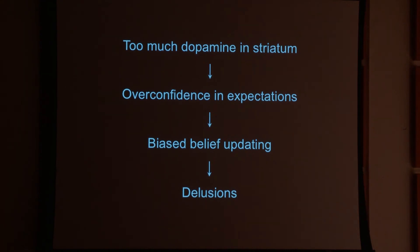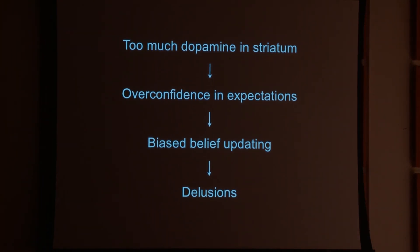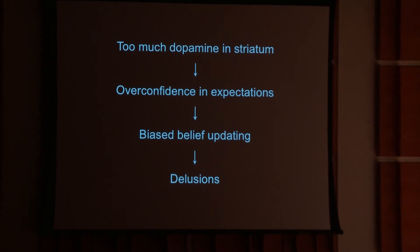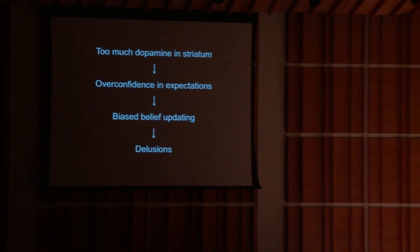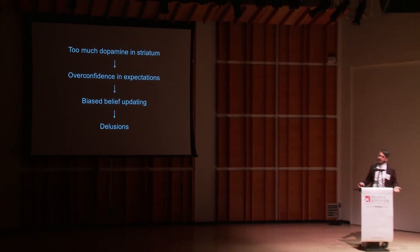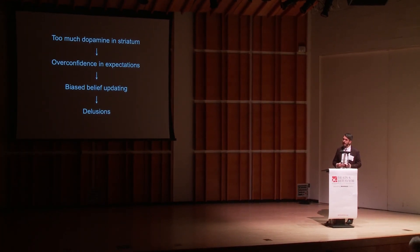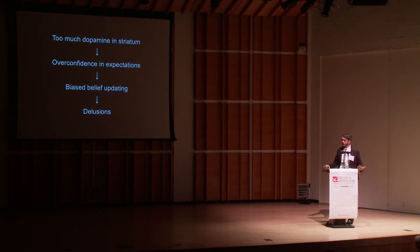We're also doing some work in delusions — the other type of false delusional beliefs — with a similar model. I don't have time to explain it in detail, but the idea is very similar. We think this is important because it might lead to new treatments, but also because it might reduce the stigma associated with psychosis by casting it in terms of an extreme variant of something that happens to all of us — just biases in perception and the way we think about things.